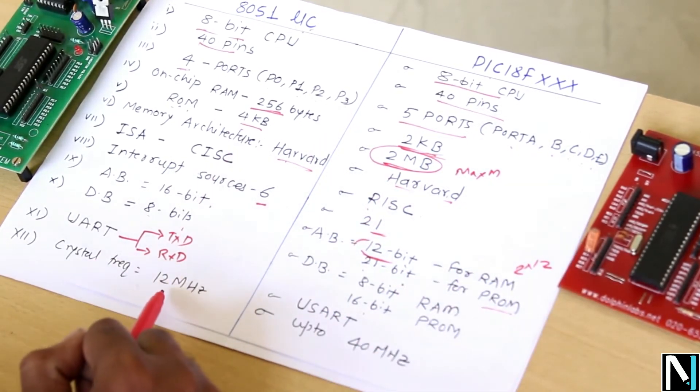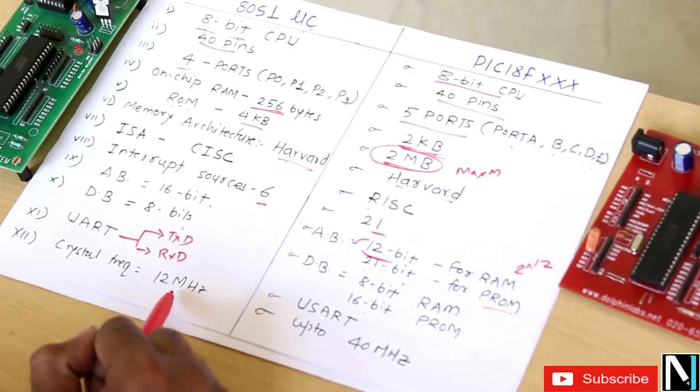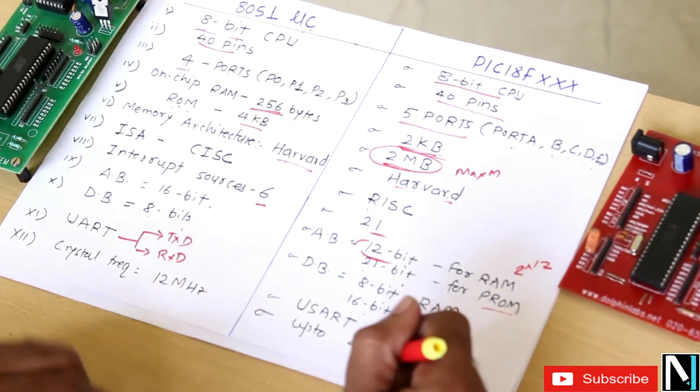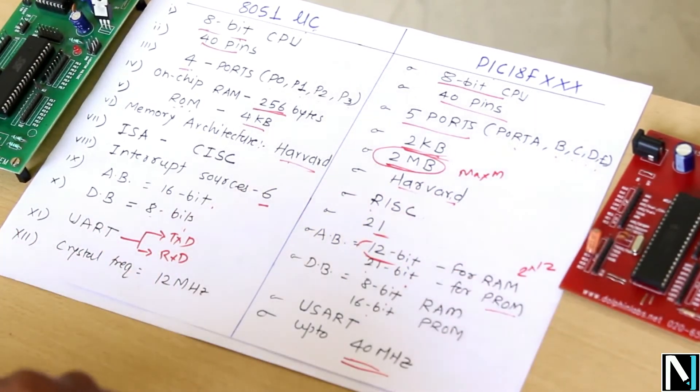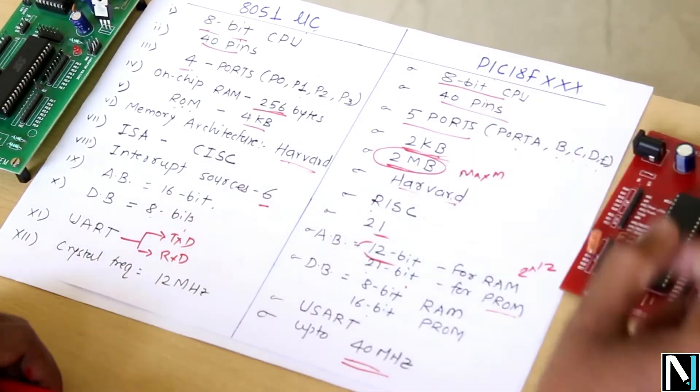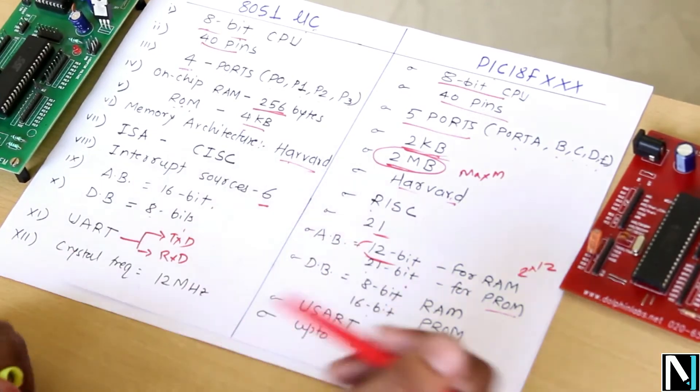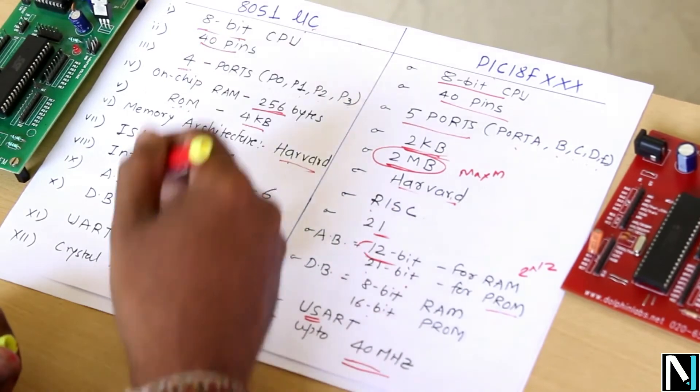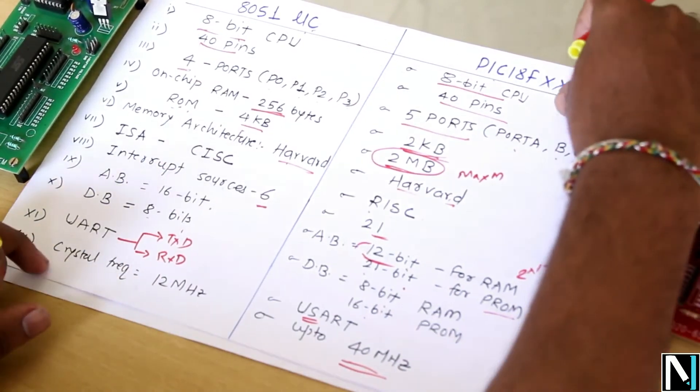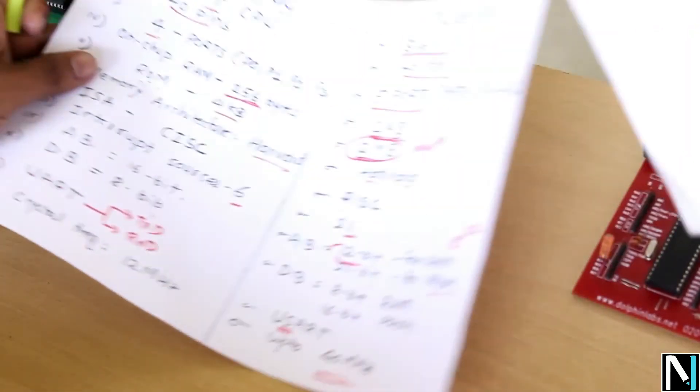Crystal frequency - up to maximum frequency is 12 megahertz, while in case of PIC 18, its maximum frequency is up to 40 megahertz. Now if you go for the additional features of PIC 18F microcontroller, as it has the synchronous port also, then that is not available in 8051 microcontroller.